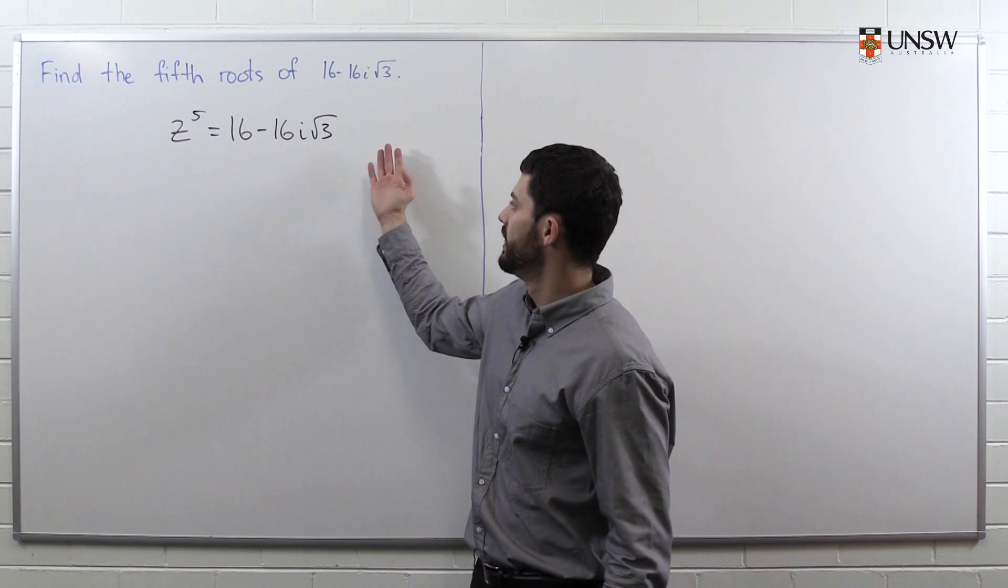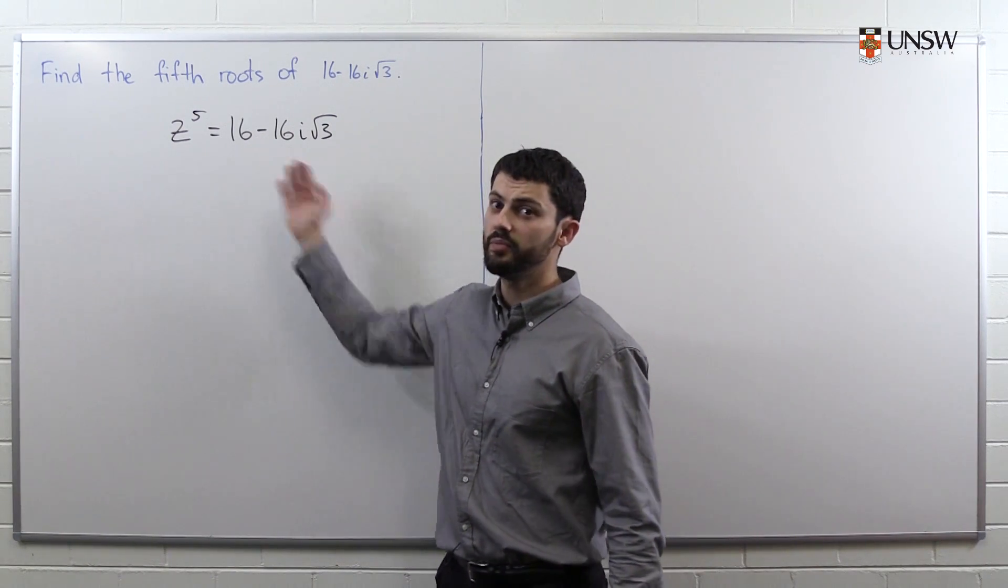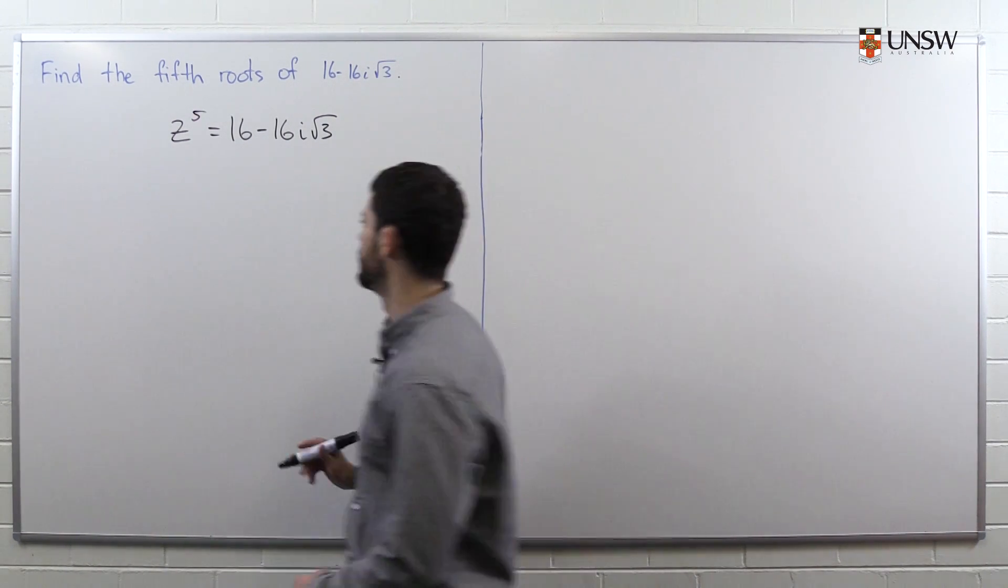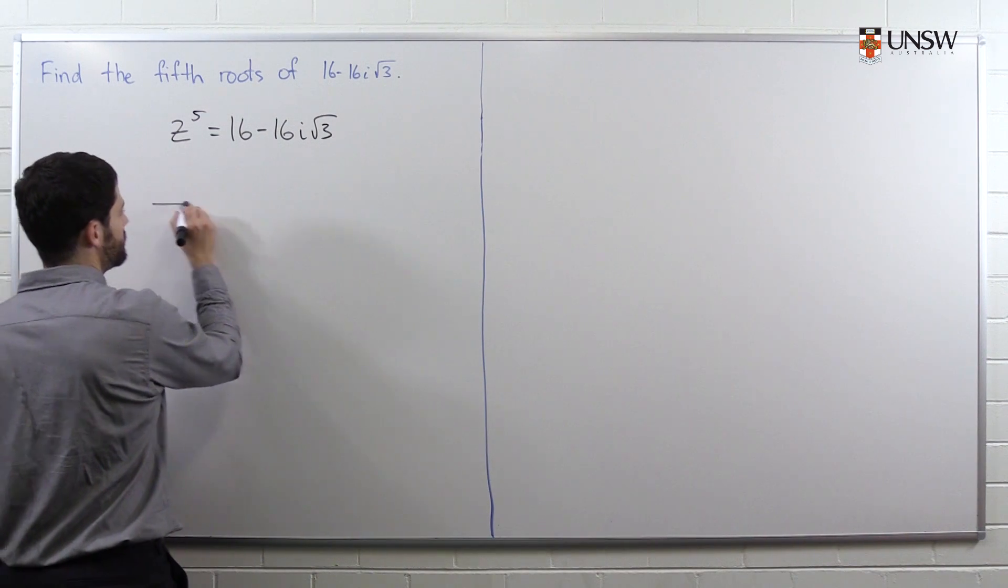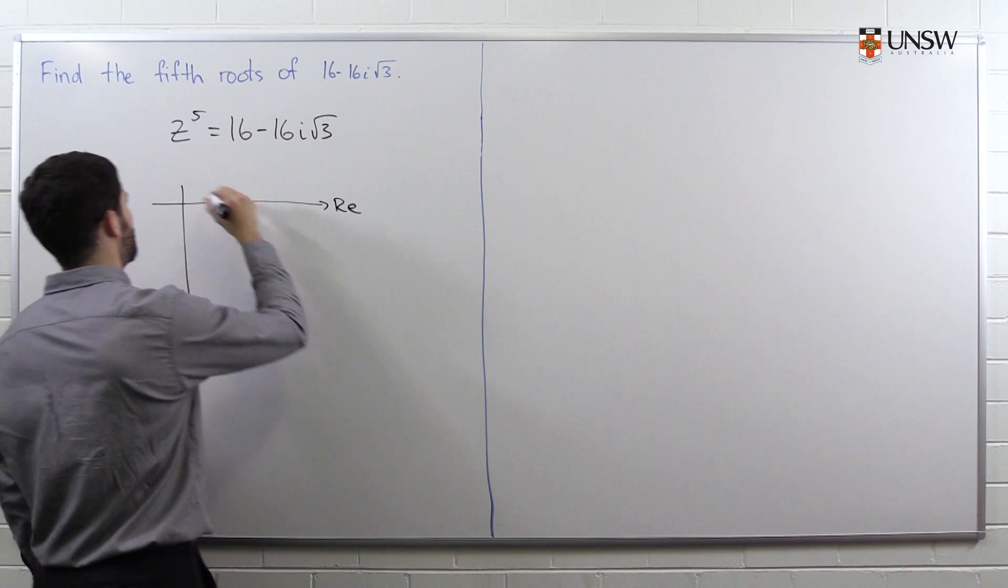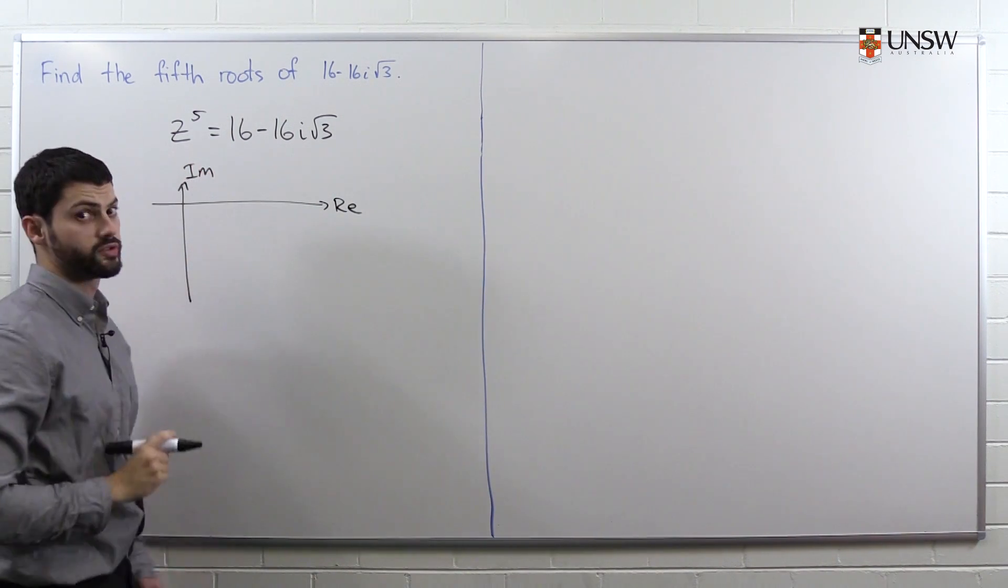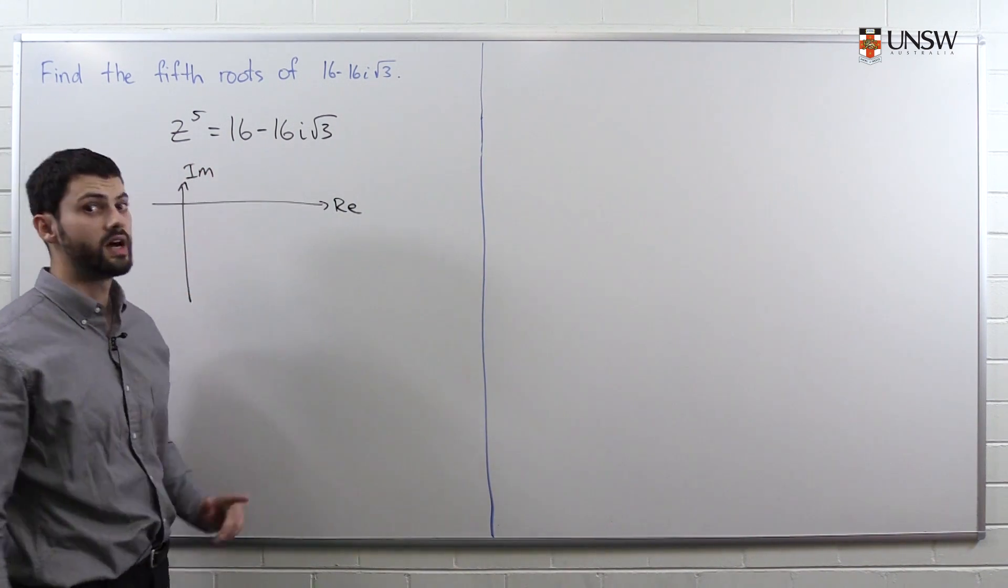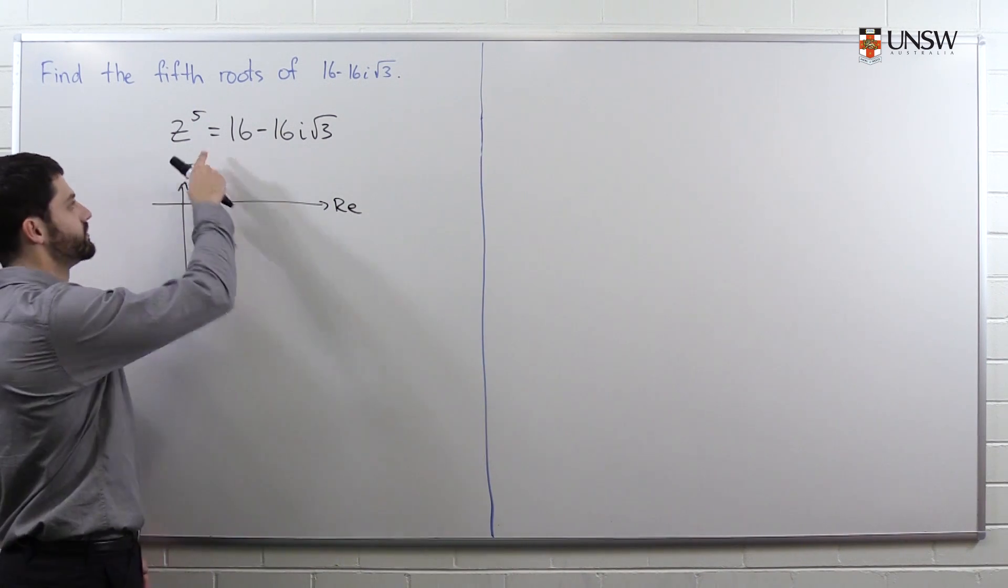The first step is to convert this complex number into polar form. And in order to do this, we should always draw a diagram. If we don't draw a diagram, we might get the modulus wrong, or more likely, we might get the argument wrong. So a diagram always helps.